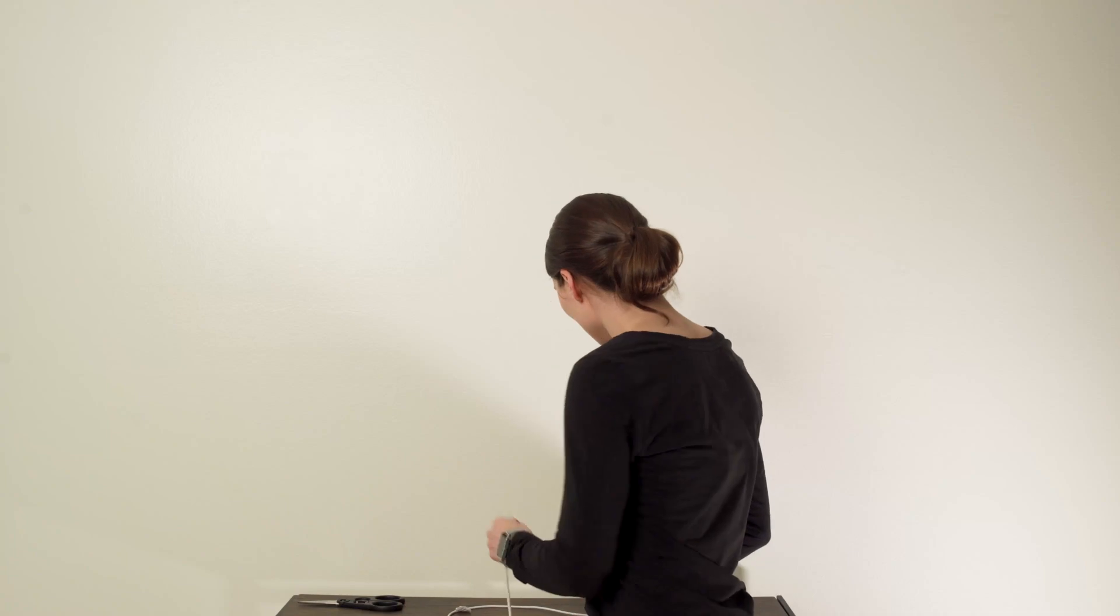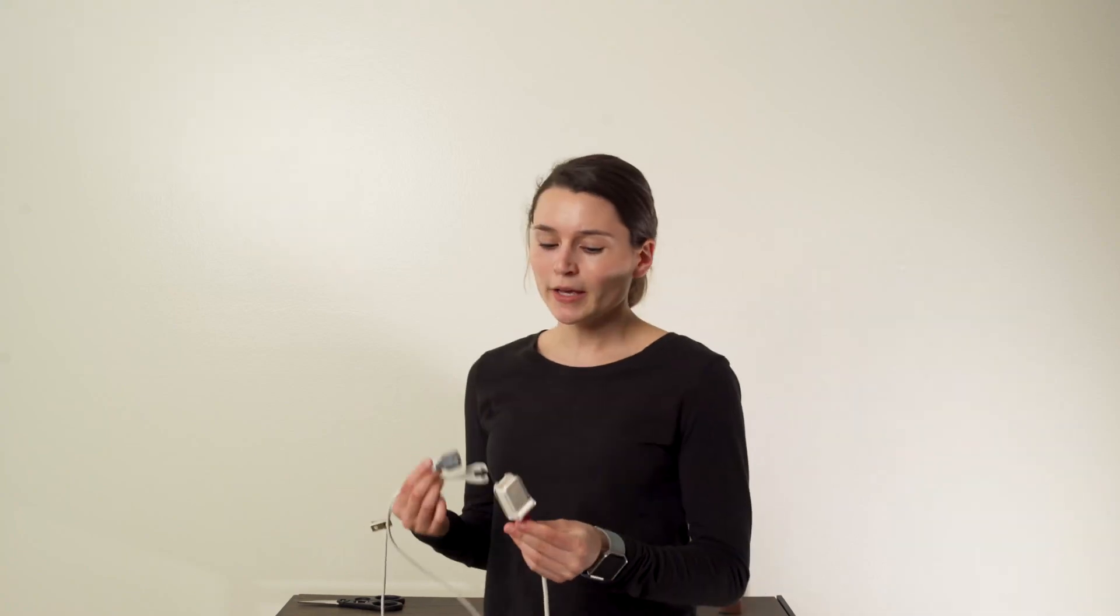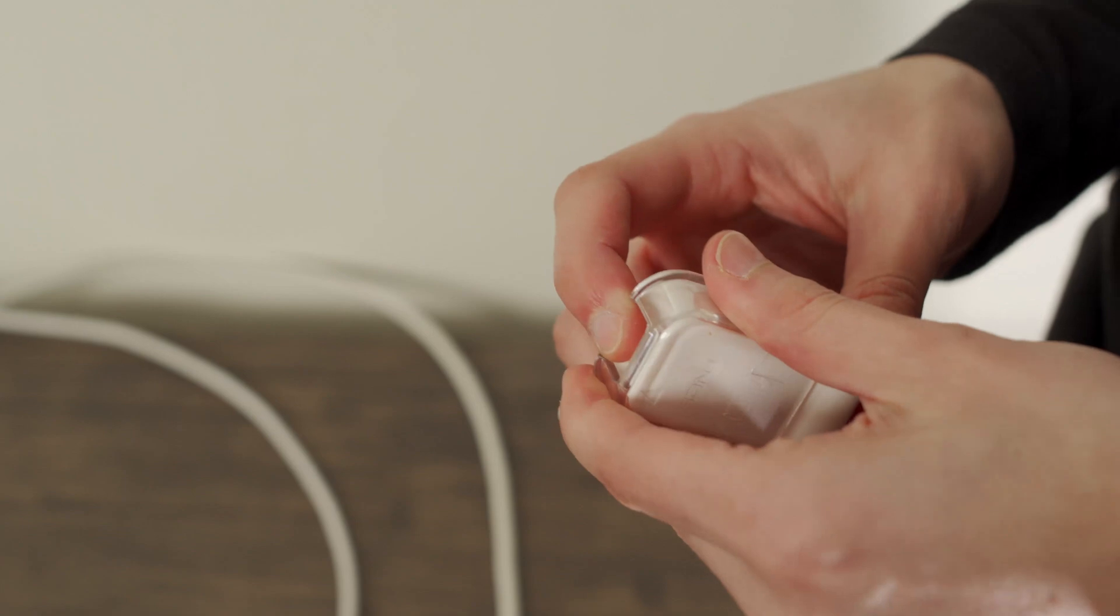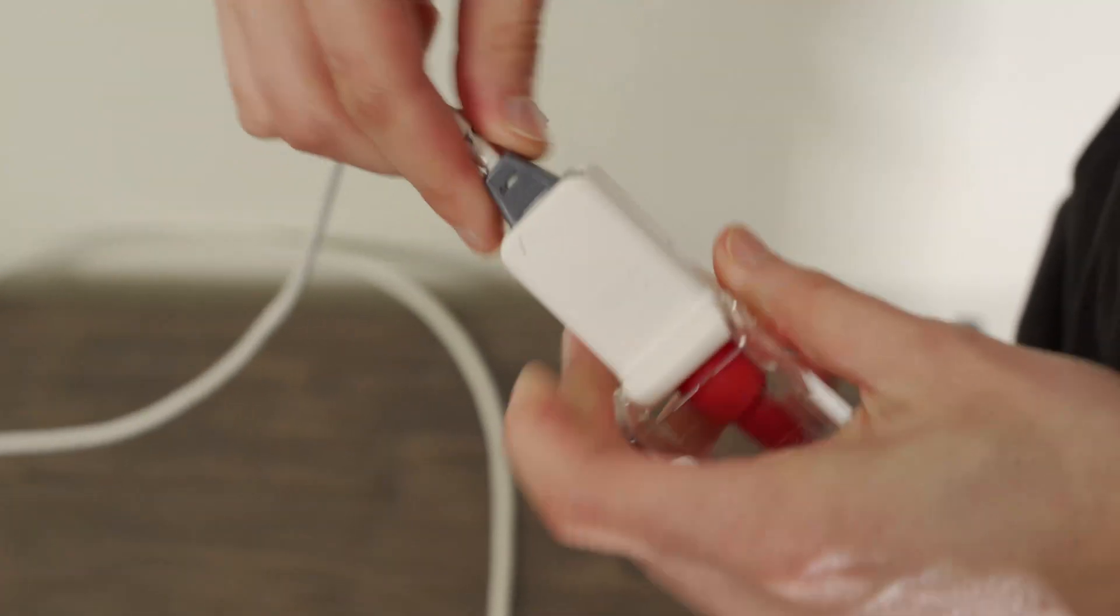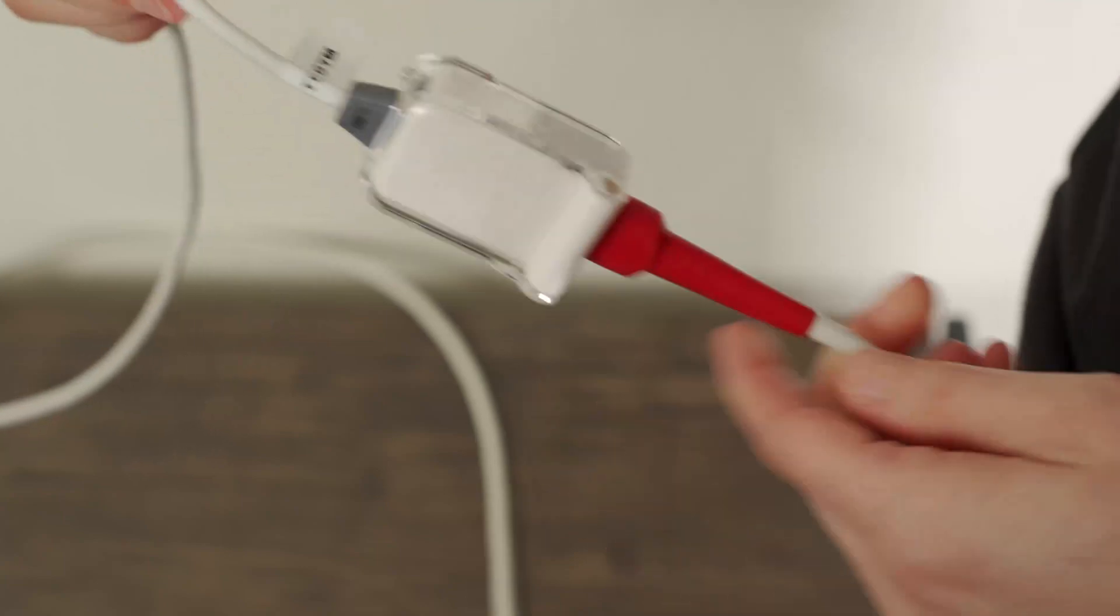Next, you'll grab the cord with the forehead sensor and plug it into the connecting piece. You'll do this by opening up the plastic, plugging it in, and then closing the plastic to secure the connection.